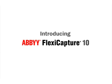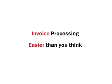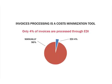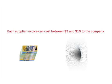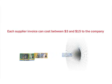This presentation will deal with the seemingly complicated task of processing invoices. Only 4% of invoices are processed through EDI, Electronic Data Interchange, which means that 96% of all invoices are still received as paper or PDF documents. Each supplier invoice can cost between $3 and $15 to the company. Total cost of invoice processing, including sorting documents, keying in data, and archiving the invoice, could be too high.